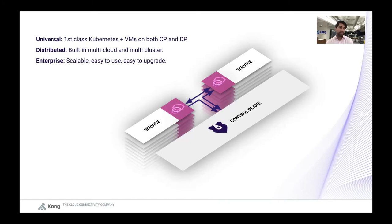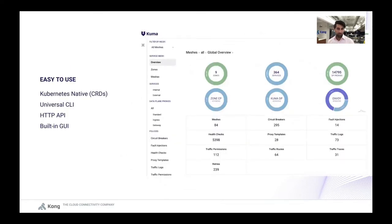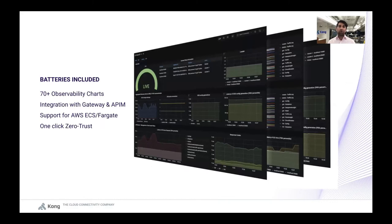Simplicity is a feature — it's not a nice to have — and we built Kuma with that in mind. Kuma comes with a lot out of the box: a GUI, an HTTP API, native Kubernetes resources on Kubernetes, and declarative config on VMs. There is an HTTP API and a CLI that allows us to effectively integrate Kuma with our CI/CD workflows. It also comes with observability charts and very easy-to-use integrations with gateways and existing API management solutions. It supports any containerized environment — not just Kubernetes or VMs, but also environments like AWS Fargate or ECS. Enabling features like zero trust security, fault injection, and traffic routing is one click away with native policies.